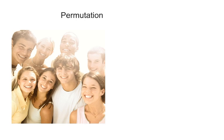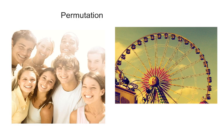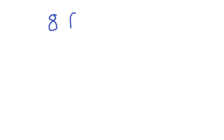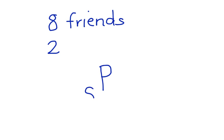A permutation is an arrangement of objects in a specific order. In this case, we're not talking so much about objects, but we're talking about people — those friends going on the ferris wheel. We know that there are eight friends, and they can ride the ferris wheel two at a time. So we want to know the permutation of eight friends taken two at a time.